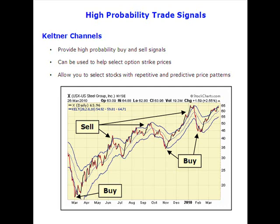Whenever a stock is trading near the upper channel, it's becoming overbought and will usually retrace back to the middle or lower channel. Whenever the stock is trading near the lower channel, it's becoming oversold, and that's usually a good entry signal. You can see for U.S. Steel there were a couple of times when the stock actually closed below the lower Keltner channel. It doesn't happen that often, but usually when that happens, there's a very powerful rally that follows. So I like to keep an eye out for that type of signal as it usually results in a high probability buy signal.